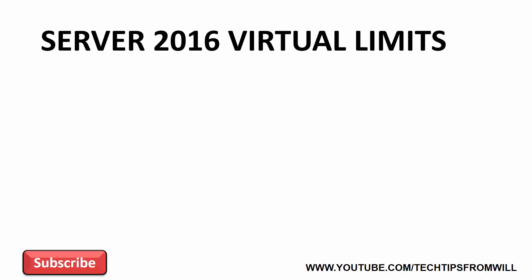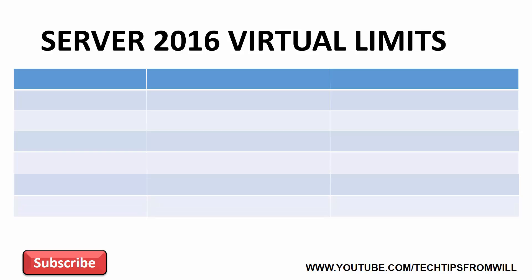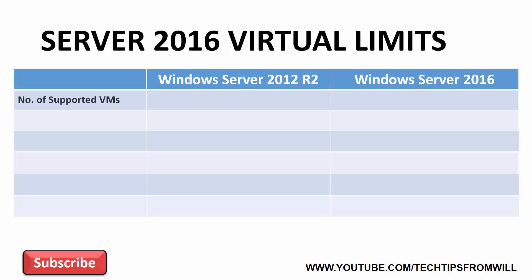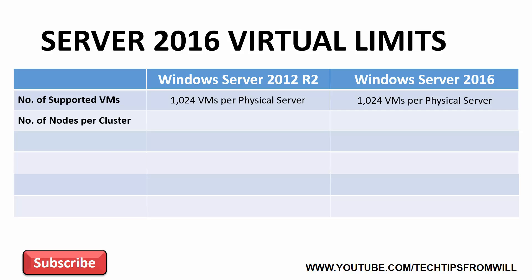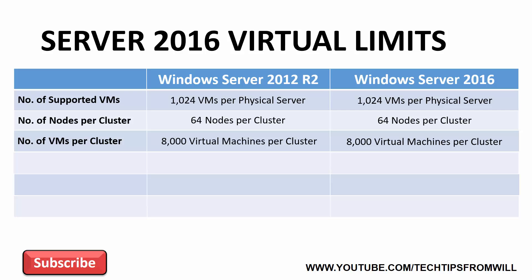That covers the scalability for physical servers. Now let's take a look at scalability for virtual servers. First of all is the number of supported virtual machines. On a Windows Server 2012 R2 server with Hyper-V installed, you can create and run up to 1024 virtual machines per physical server. On Windows Server 2016, this is unchanged — still 1024 virtual machines are supported on a single server with Hyper-V. It's also worth noting that if you're clustering your virtual machines for high availability, you can have up to 64 Windows Server 2016 host servers participating in a single cluster, and up to 8,000 virtual machines running in the cluster. Again, these figures are unchanged since Windows Server 2012 R2.